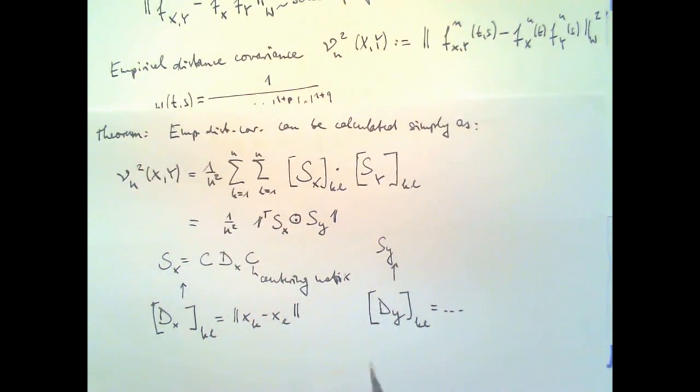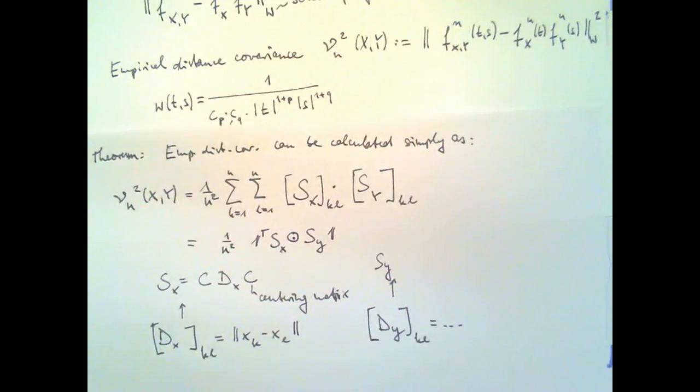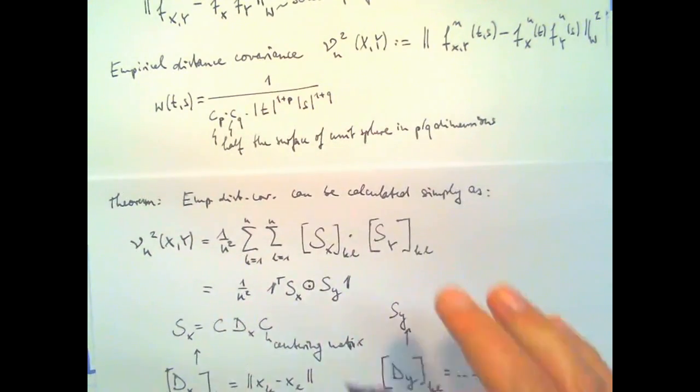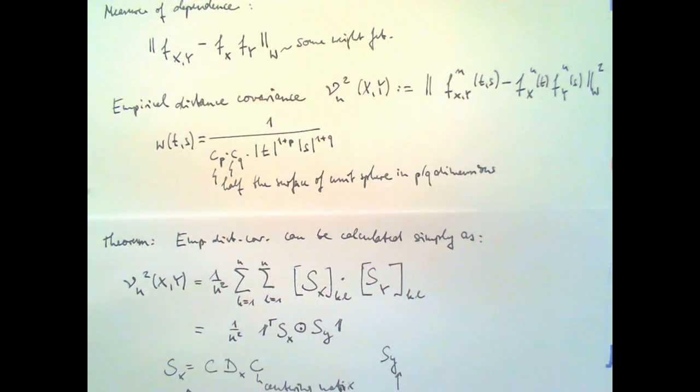And that gives me my empirical distance covariance. And this, by the theorem that they prove, is the same thing as computing this measure of dependence here in Fourier space.